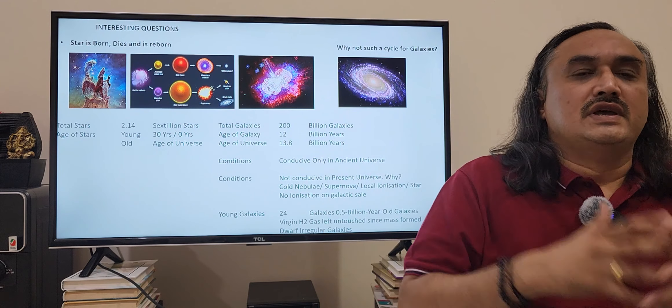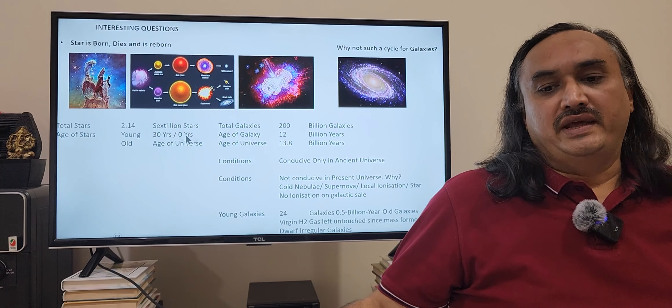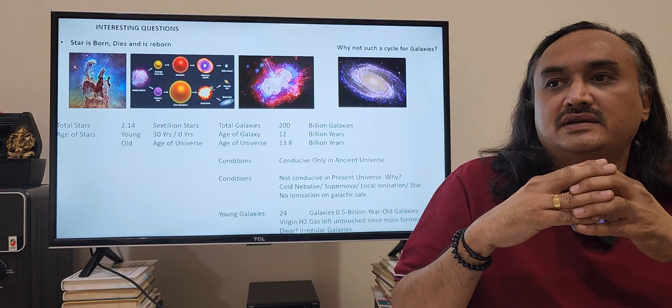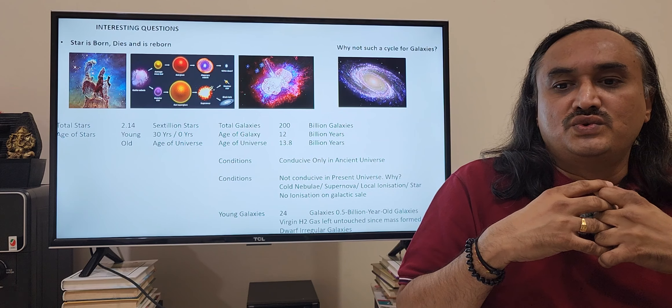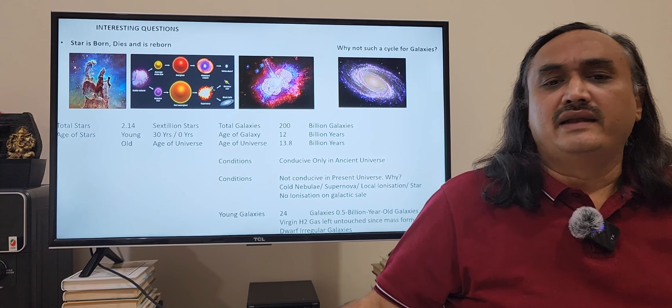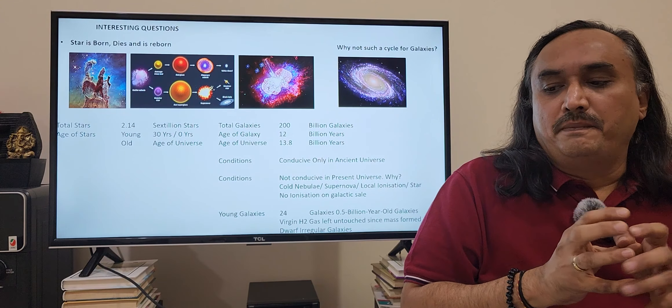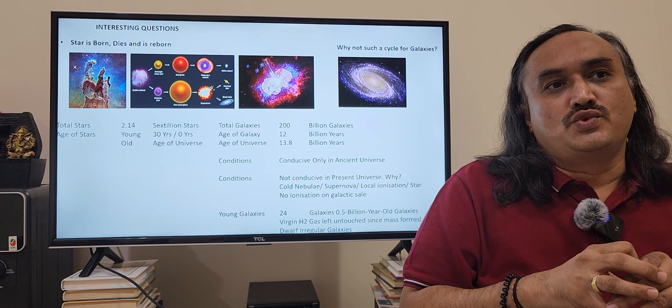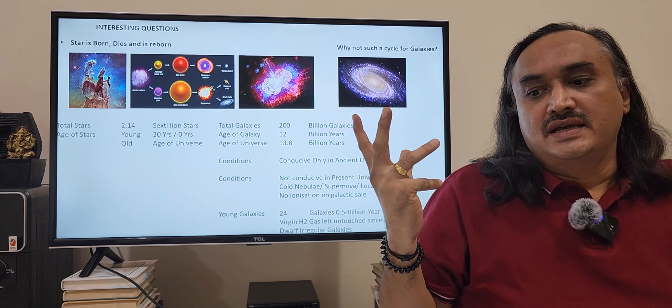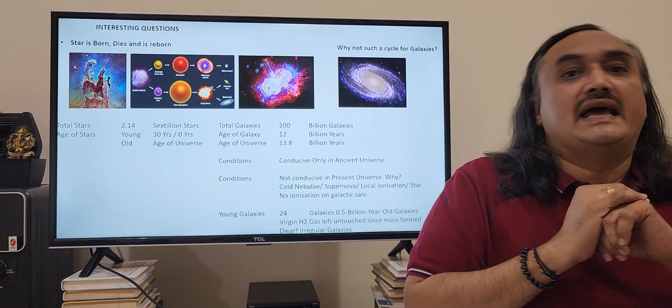So why can't galaxies form? The supernova which is happening is just one star. It can possibly generate the pressure to form some more stars nearby, but this would be a local ionization limited to only local form. For you to cook a galaxy in the contemporary universe, you have to have that ionization in the galactic scale, and that is missing. That is why you don't see galaxies forming.